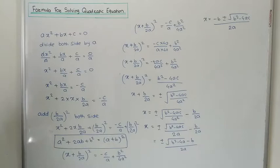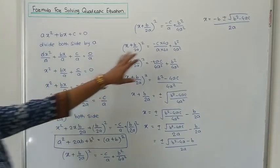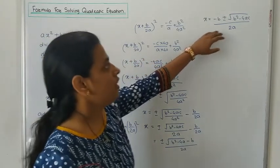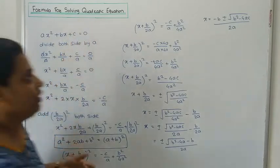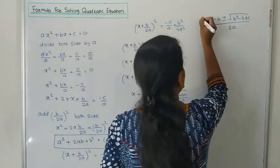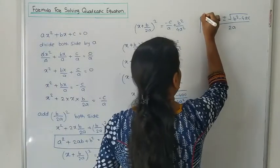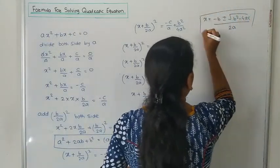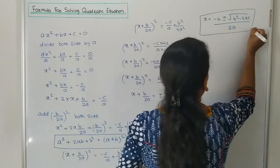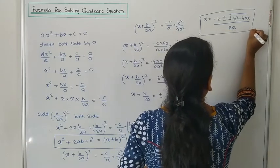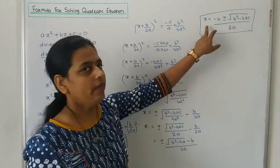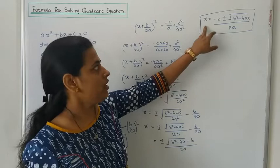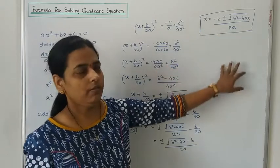So this is your formula. This formula is used to solve the quadratic equation. It gives two values with plus or minus — that means one value uses plus and one uses minus.